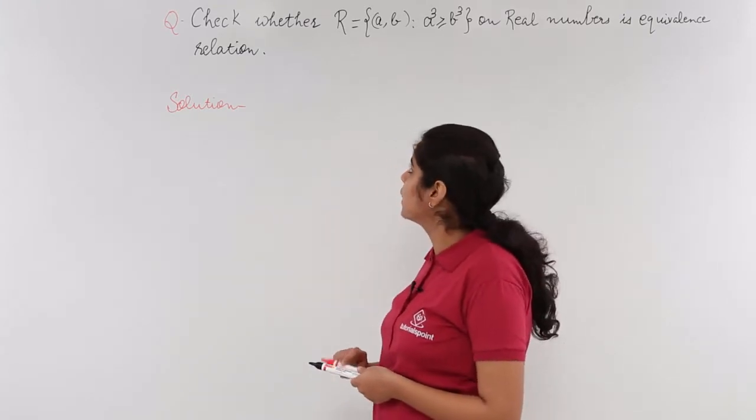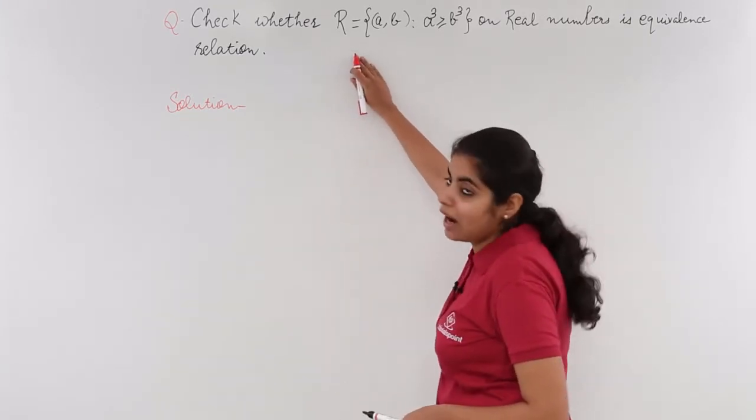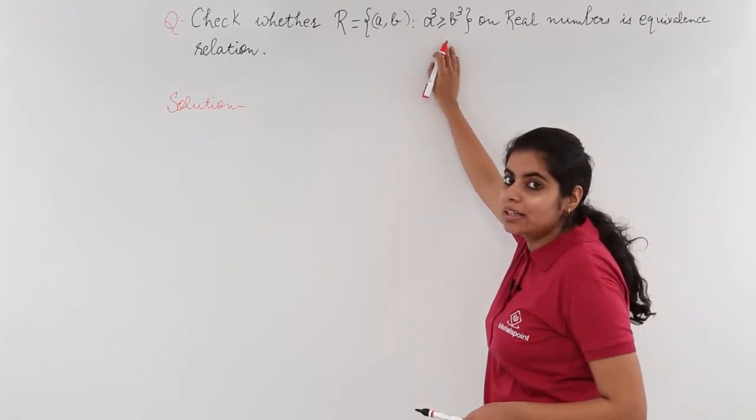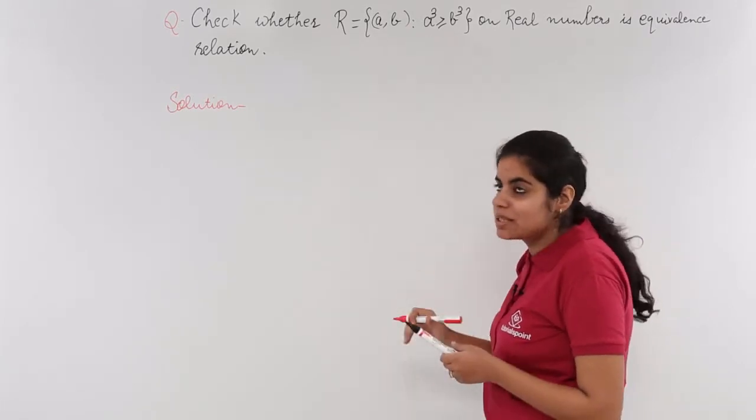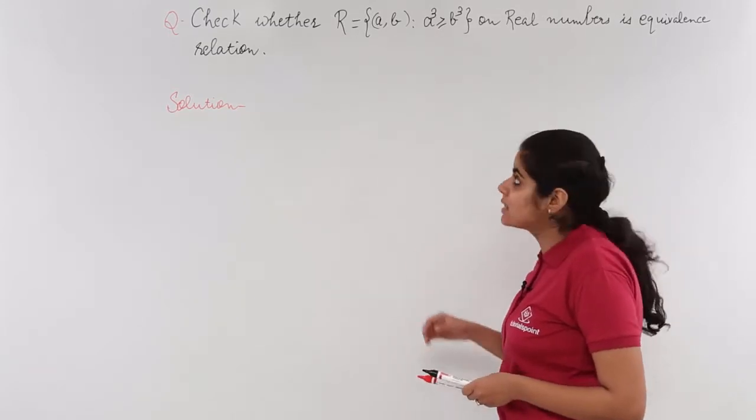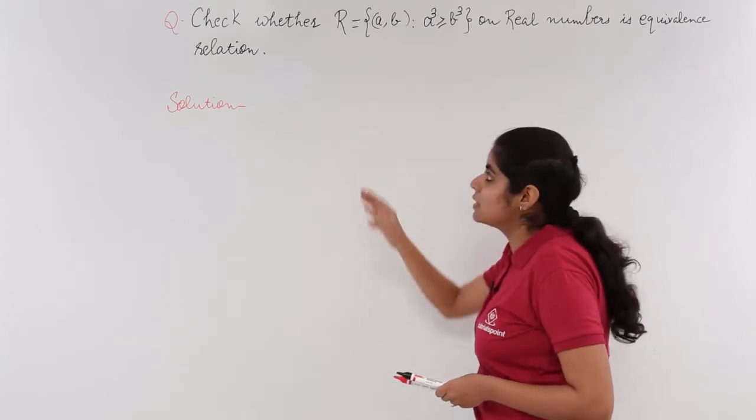Let's read the question together. Check whether the relation R = {(a,b) : a³ ≥ b³} is an equivalence relation. This symbol means greater than or equal to.